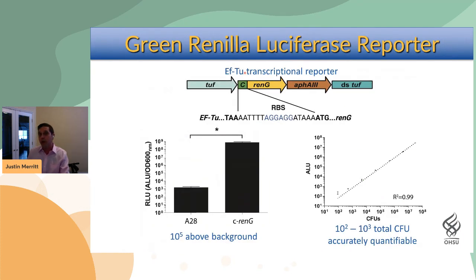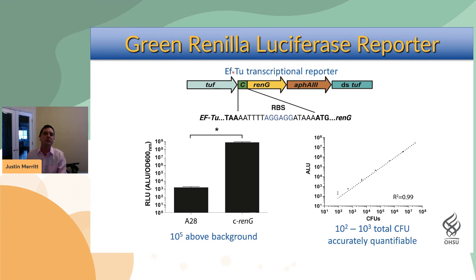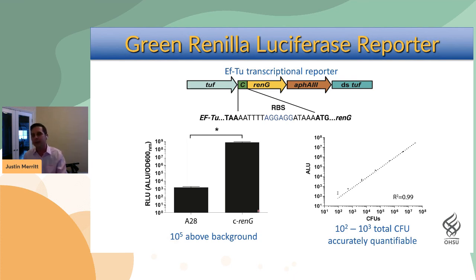We also created a reporter strain using green Renilla luciferase — a synthetic luciferase we developed that is extremely bright. Inserting it downstream of the EF-Tu gene, one of the most highly expressed constitutive genes in almost all bacteria, we get a signal five orders of magnitude above background. This is highly precise — we can dilute the reporter down to roughly 100 to 1,000 total cells and accurately quantitate signal, all in a clinical isolate.